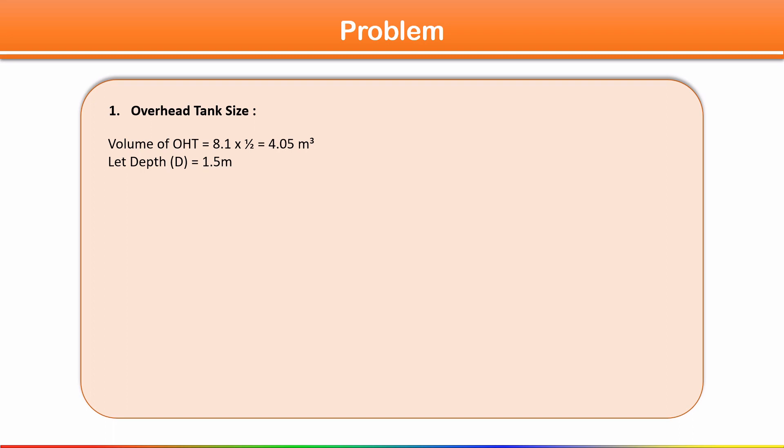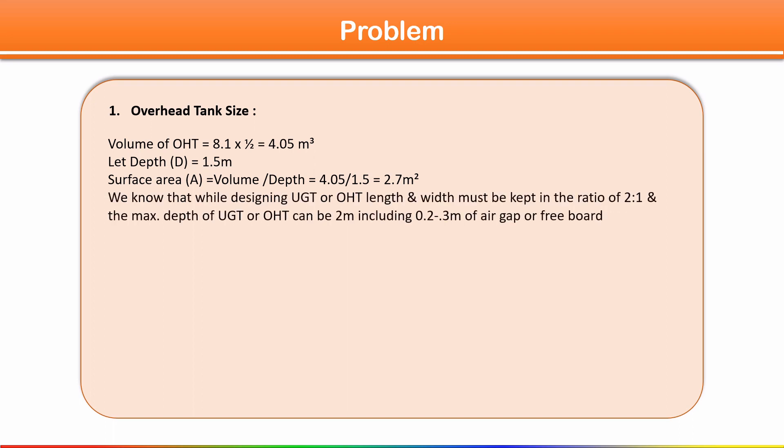Once we have the volume, we assume a depth. The maximum depth for OHT or UGT is 2 meters including freeboard of 0.2 to 0.3 meter. Let's take depth as 1.5 meters. Surface area = volume ÷ depth = 4.05 ÷ 1.5 = 2.7 square meters. Length and width must be kept in ratio 2:1.